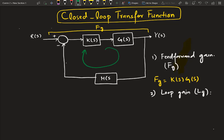So, for this particular system, what will be the loop gain? If you see closely, we will be having the product of K of S, G of S, H of S, and the minus sign which is encountered over here. So, let us now write the loop gain, Lg, it will be equal to minus K of S, G of S, and H of S.